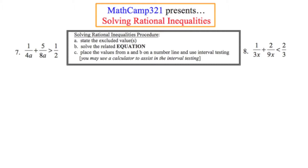That procedure is outlined in the box in the middle of the slide. Step A: state any excluded value or values. Step B: solve the related equation. Step C: place the values from parts A and B on a number line and use interval testing.